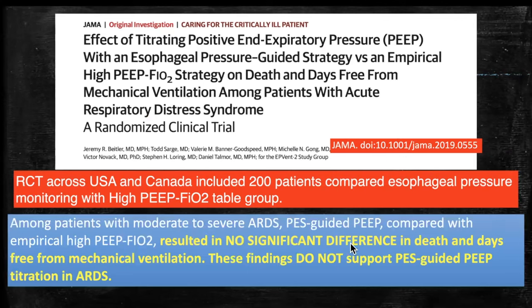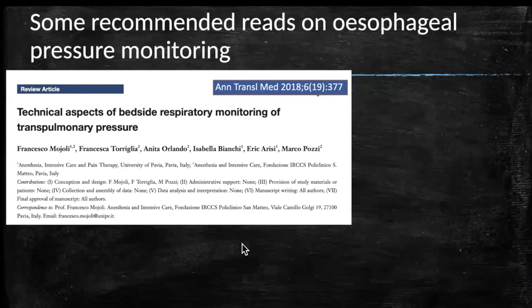In EPVent-2, a high PEEP table was used, whereas EPVent-1 had used a low PEEP table. Probably because patients were already on higher PEEP, no additional benefit of esophageal pressure monitoring could be detected. These are two important papers that I recommend the audience note and review.